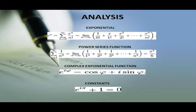Analysis — Exponential expansion: Euler is well known in analysis for his frequent use and development of power series — the expression of functions as sums of infinitely many terms. For example: e^x = Σ (n=0 to ∞) x^n / n! = lim(n→∞) of (1/0! + x/1! + x²/2! + ... + x^n/n!).